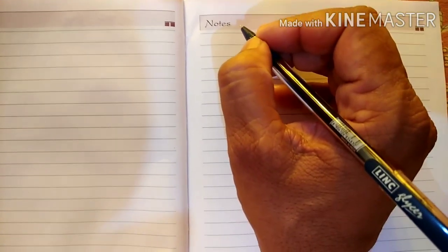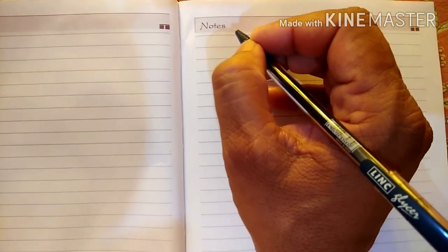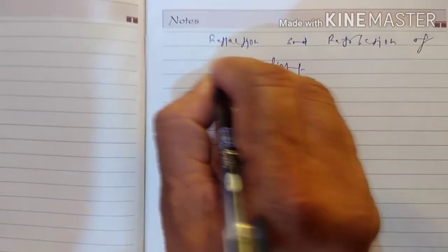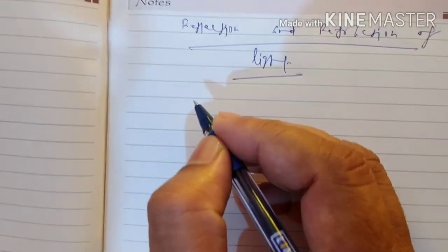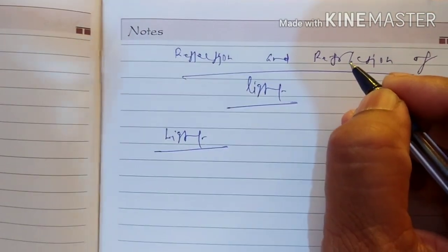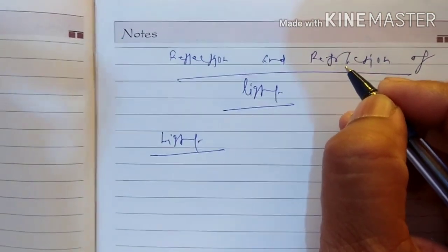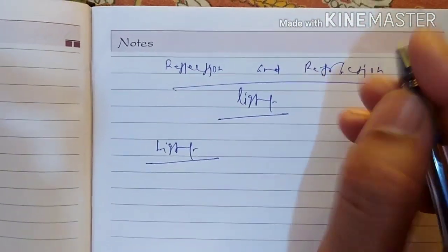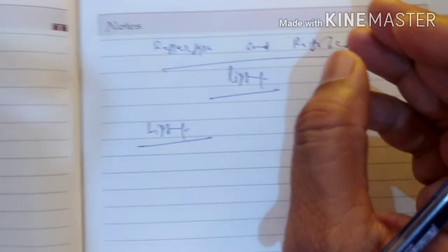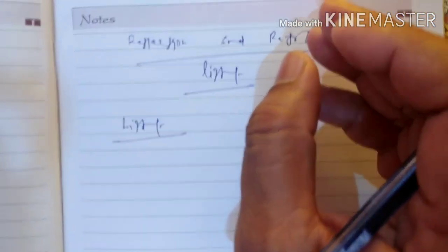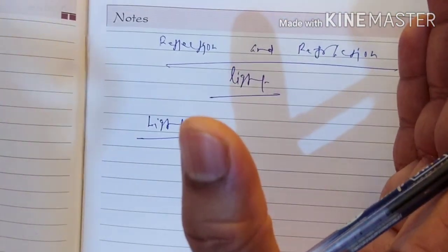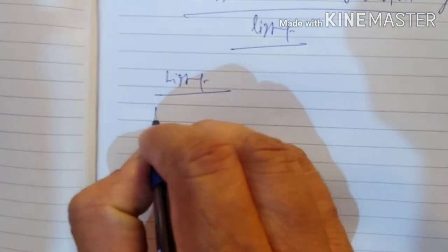Dear students, today we shall start the first chapter of Class 10 physics: the reflection and refraction of light. First of all, we shall see what is light. We see a lot of objects in our surroundings at daytime, and also at night if light is available. But if the light is suddenly switched off, we are unable to see anything. Once the light is switched on again, we are able to see objects. With this concept, we can see that light is a form of energy.